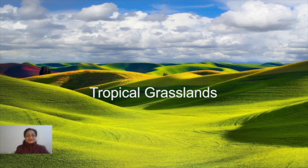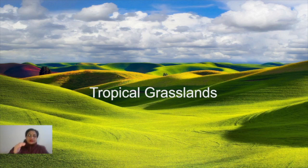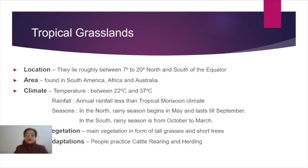The first thing is the location of the tropical grasslands. Basically, tropical grasslands are located in semi-arid to semi-humid climatic regions of subtropical and tropical latitudes. Regarding the latitudes, they lie between 7 degrees to 20 degrees north and south, in both the northern and southern hemispheres.